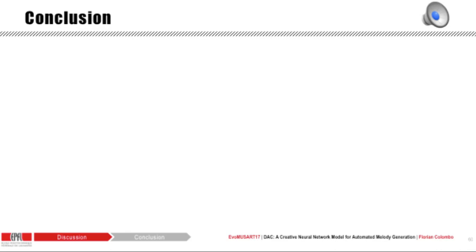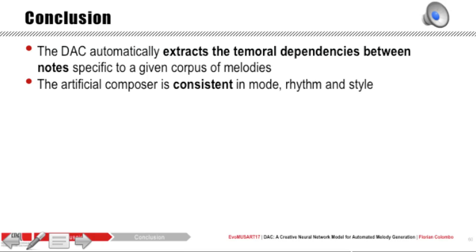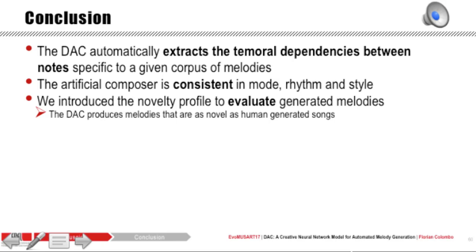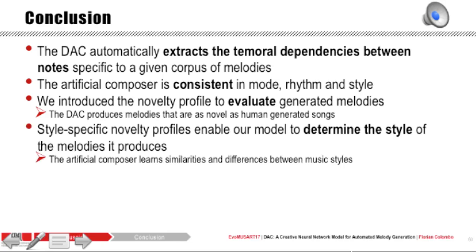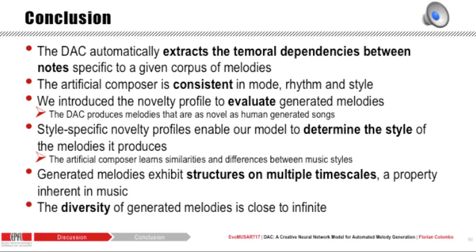To conclude, in this paper we presented and evaluated the Deep Artificial Composer, a model for the algorithmic composition of melodies. It automatically extracts temporal dependencies between notes specific to a given corpus, and is consistent in mode, rhythm, and style. We introduced the novelty profile to evaluate generated melodies and showed that the Deep Artificial Composer produces melodies as novel as human-generated ones. The style-specific novelty profiles enable the model to determine the style of the melody it produces, and generated melodies exhibit structures on multiple time scales. The diversity of generated melodies is close to infinite.